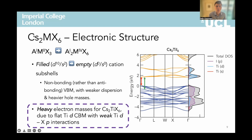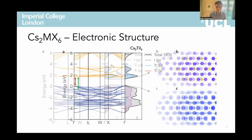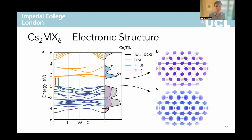Looking then at the titanium polymorphs, the same considerations apply for the valence band with heavy hole masses, but now our conduction band is derived from titanium D orbitals, which have very weak interactions with the halide P states, and give rise to very flat electron bands with heavy carrier masses. Looking at the charge density of our conduction band minimum, this strong real space localization is apparent. Analysis of the conduction band orbital character and symmetry reveals that the density of states peaks indeed correspond to the T2G and EG molecular orbital states that we'd expect from crystal field theory for an octahedral titanium complex, again highlighting the molecular nature of this family.